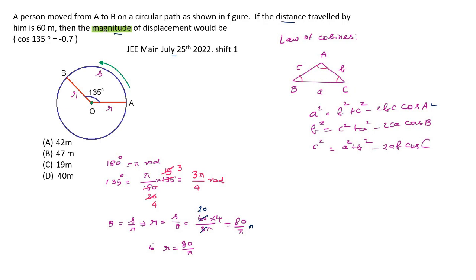Many people are using law of sines to solve this problem. Of course, you can use it. But, it is better to use law of cosines, because he has given cos of 135 degree as minus 0.7. He has not given sin 135 degree values. So, you will have to write more steps. So, it is better to take directly the formula which involves the cos of the angle.